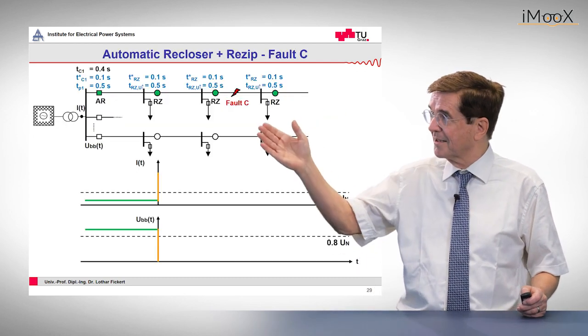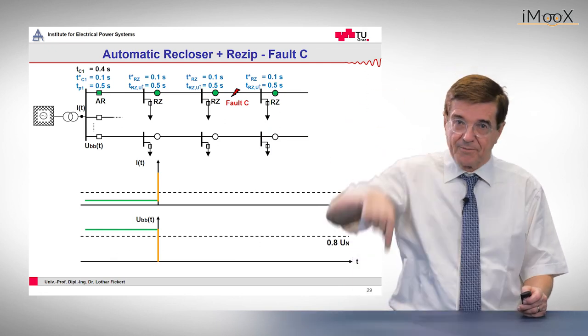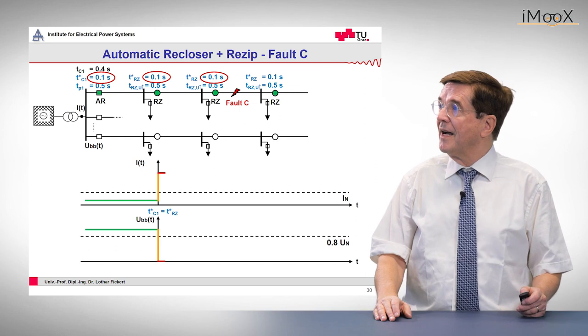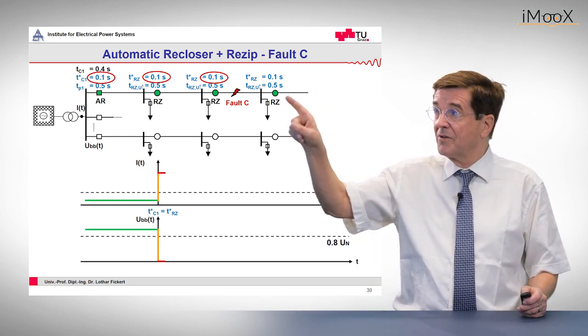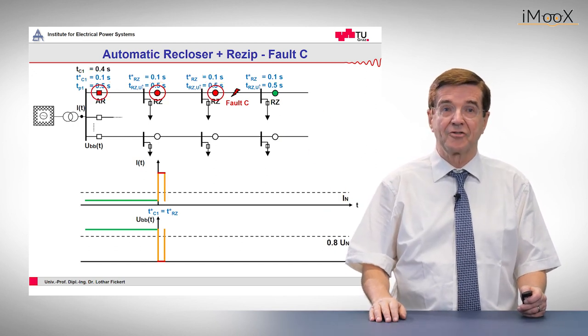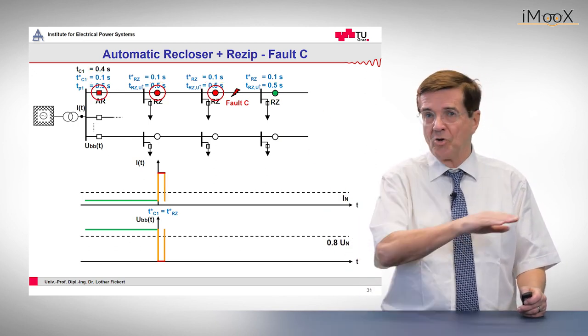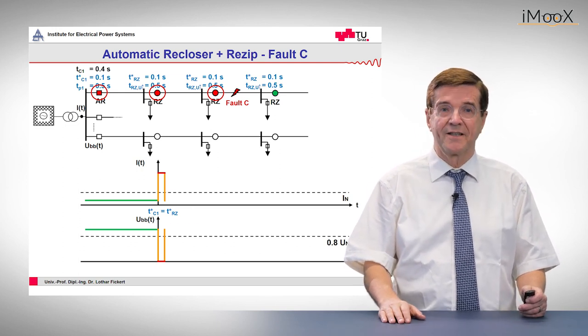So we start with the fault at the end of the line. The fault occurs, the current goes up, the voltage goes down. And after 0.41 seconds, all of these reclosers and the auto recloser AR at the end trip out immediately. So we have a complete loss of all substations in this line.